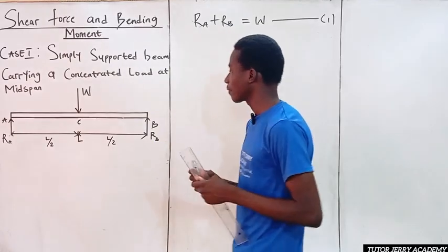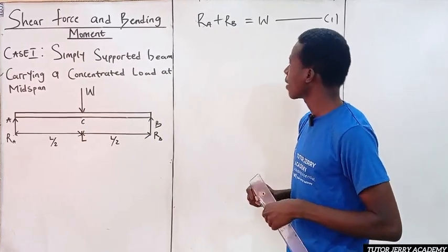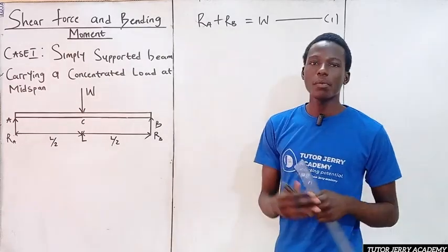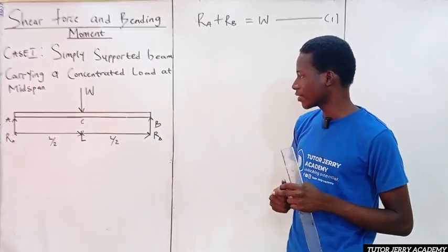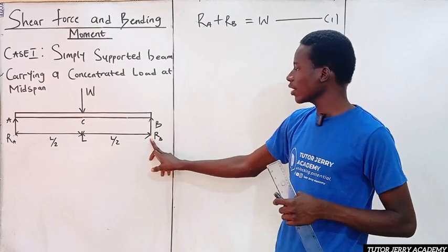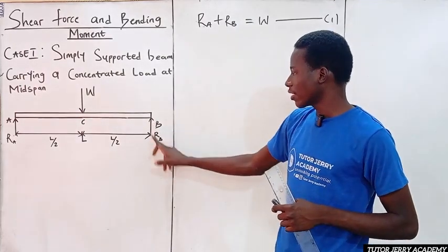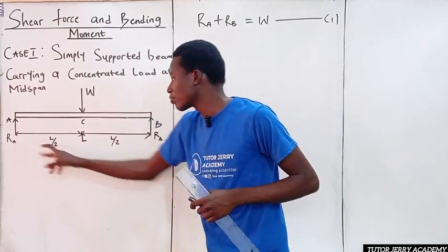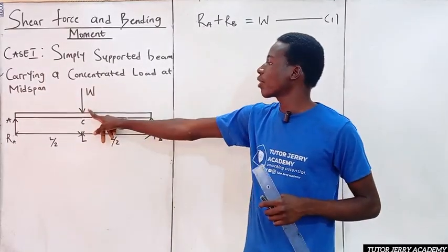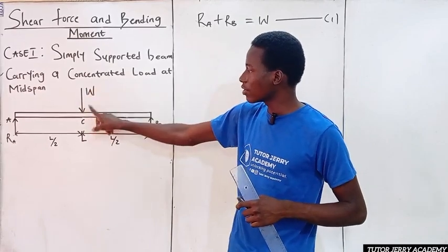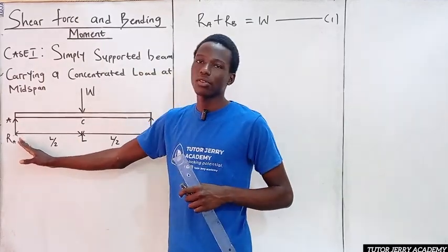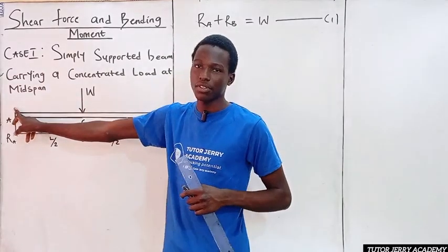Similarly, we can proceed by calculating the moment at point A. We know that moment is force times perpendicular distance. Calculating moment at point A, we have a reaction force RB multiplying the perpendicular distance to A, which is L. So we have RB multiplied by L. At the load point we have force W multiplying its distance from A, which is L over 2.